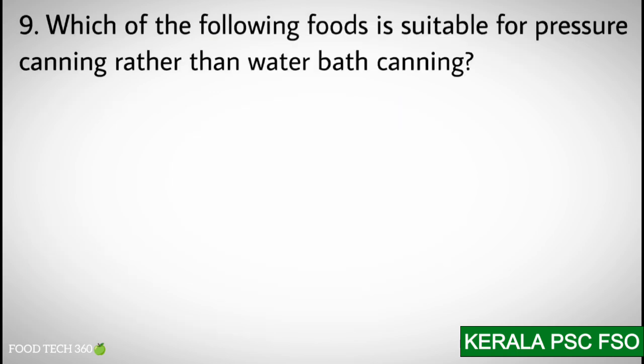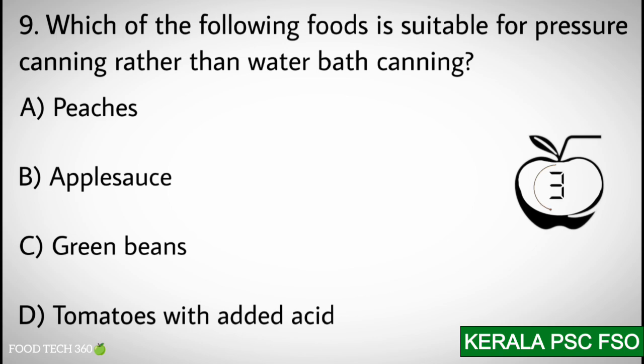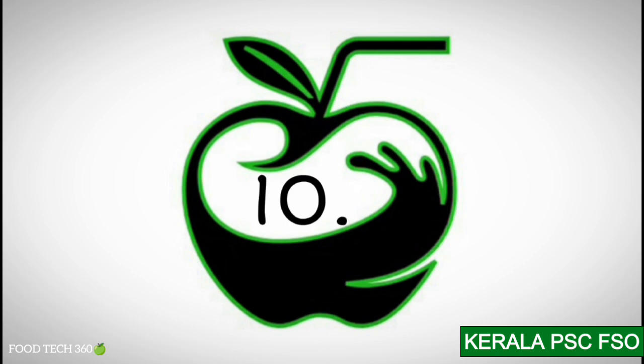Q9. Which of the following foods is suitable for pressure canning rather than water bath canning? Options: A) Peaches, B) Applesauce, C) Green beans, D) Tomatoes with added acid. Correct answer: C) Green beans.